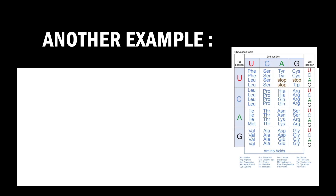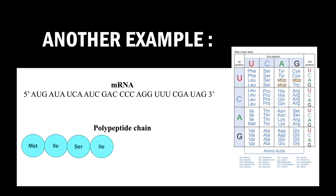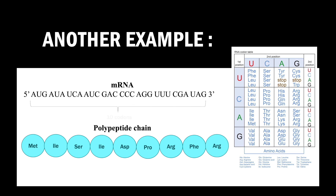To familiarize ourselves with translation, let's try another example. With the genetic code table provided, translate this mRNA sequence into the sequence of amino acids. You may pause this video to do the translation. Since there are 10 codons from the start to the stop codon, and since the stop codon will not be translated into anything, the polypeptide chain will consist of 9 amino acids.